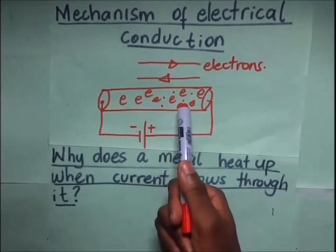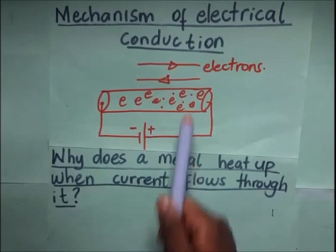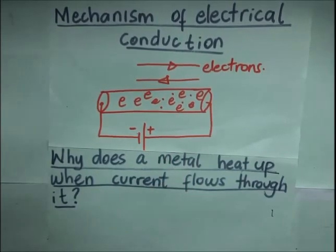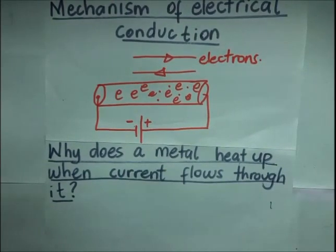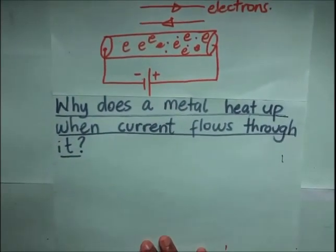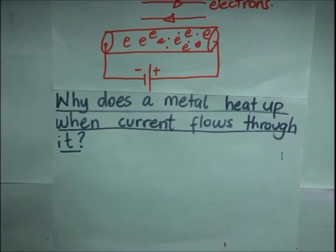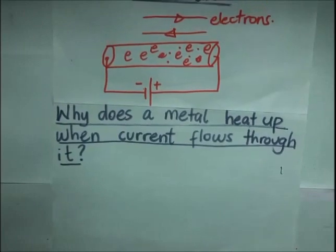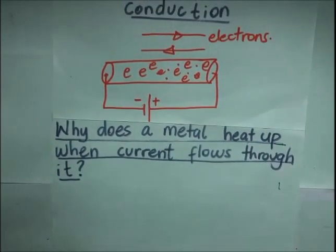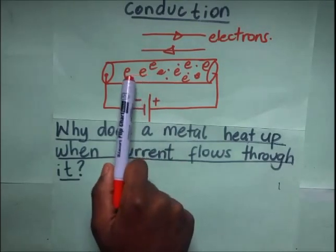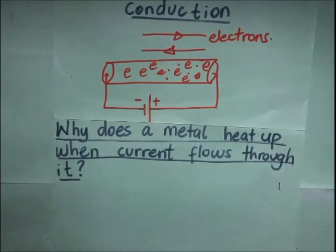In other words, collisions between the electrons and atoms increase the vibrational energy of the atoms and therefore increase the internal energy of the metal. This increases the internal energy of the conductor, therefore increasing its temperature — and that basically explains why a metal heats up when current flows through it. Also note that the increase in vibrational energy creates a larger collision area between the electrons and atoms, and as a result increases the resistance to the flow of current in the conductor. We shall explain that more when we look at factors that affect resistance.